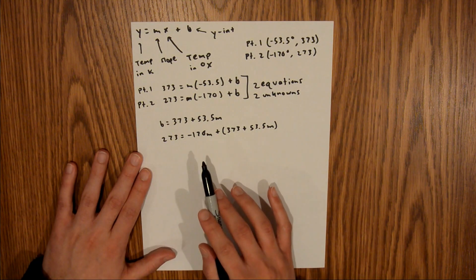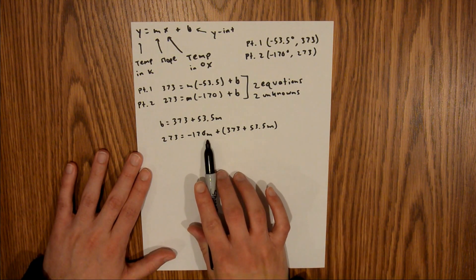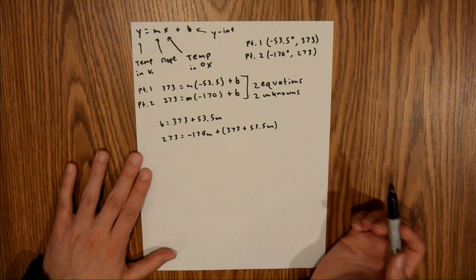So now we have one equation and one unknown, the unknown being our value of m. What I need to do now is combine like terms,